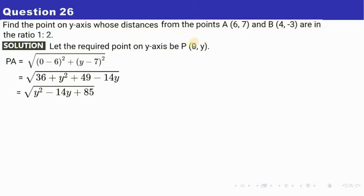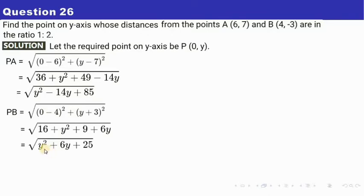Similarly, we need to calculate PB, distance between P and B. So PB is calculated in the same manner. So PB turns out to be √(y² + 6y + 25).